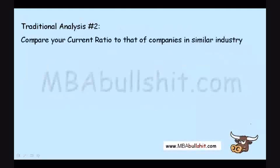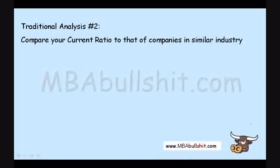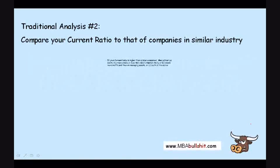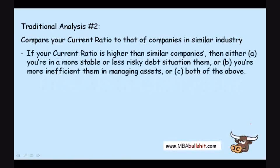The second traditional analysis method is to compare your current ratio to that of companies in a similar industry. It's important to stress similar industry, because it's normal for companies from different industries to have very different current ratios. If your current ratio is higher than similar companies, then either you are in a more stable debt situation, or you are more inefficient than them in managing assets, or both.